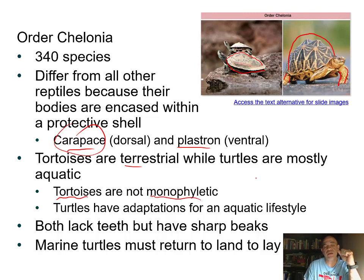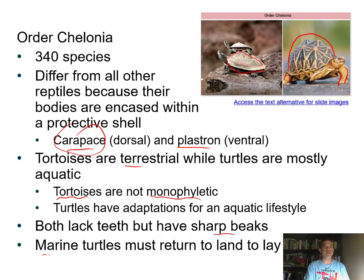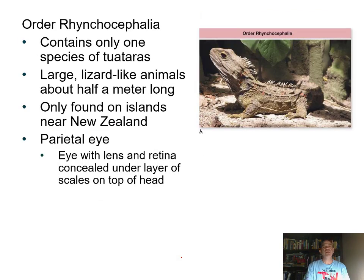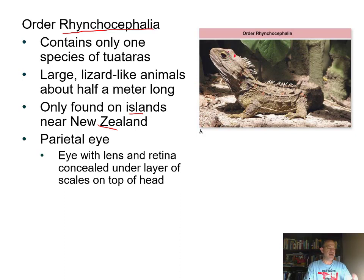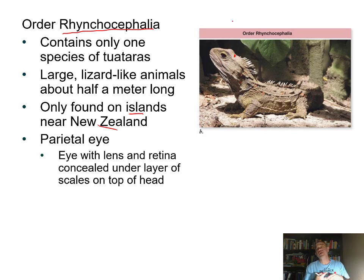The tuatara, order Rhynchocephalia, looks very lizard-like but is not a lizard. They get about a meter long and live on the islands of New Zealand. One interesting feature is a parietal eye—an eye under the skin on top of their head that doesn't form images but senses day and night cycles, likely helping set their circadian rhythms.